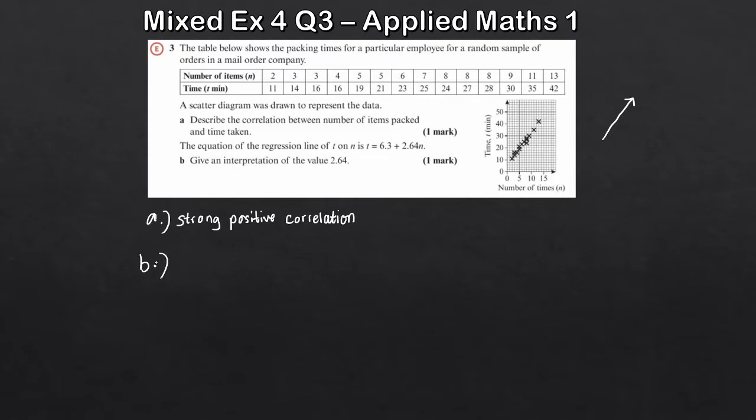Part B now, we want to give an interpretation of the value 2.64. So remember this regression line is a linear equation. And if it helps, think of y equals mx plus c. You'll have done this in chapter 5 from your A level maths for equations of straight lines. Remember the mx is actually gradient, which is what we've got here, that's 2.64n, and the c here is 6.3, that's the y intercept.